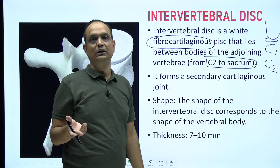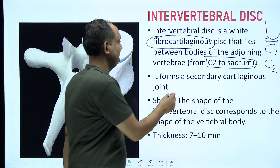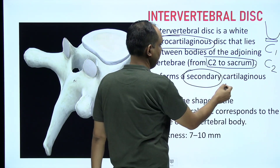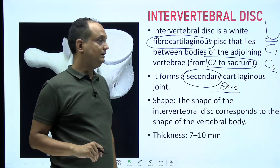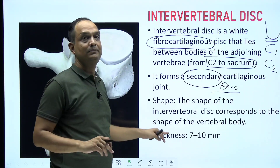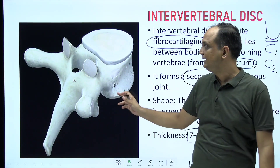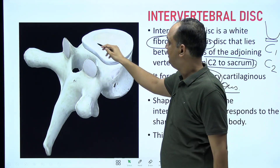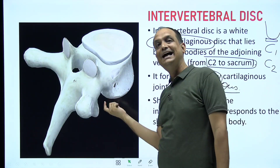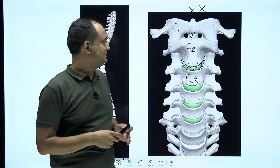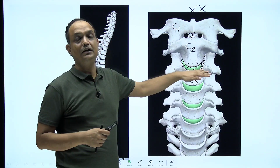The disc starts below C2 and reaches up to the sacrum. It is a secondary cartilaginous joint — specifically a symphysis — and this is a very commonly asked exam question. The shape of the intervertebral disc matches the shape of the vertebral body, and its thickness is 7 to 10 mm.